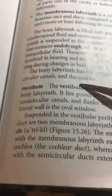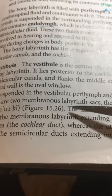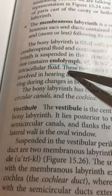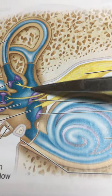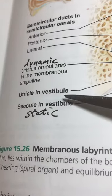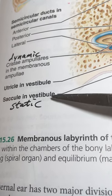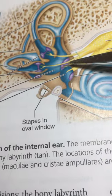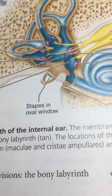Beyond this is a space called the vestibule, which also has its membranous aspect. The vestibule has areas called the utricle and the saccule. Both of these are involved with static equilibrium. We have innervation of those receptors there, and then out here we have the semicircular canals.